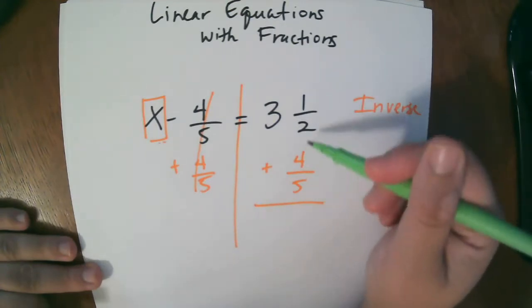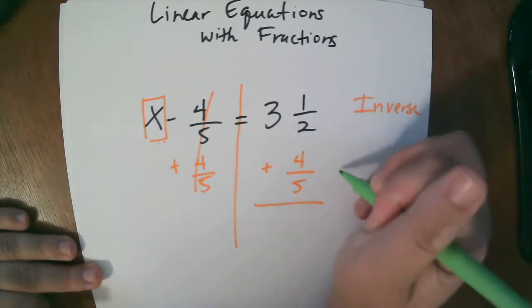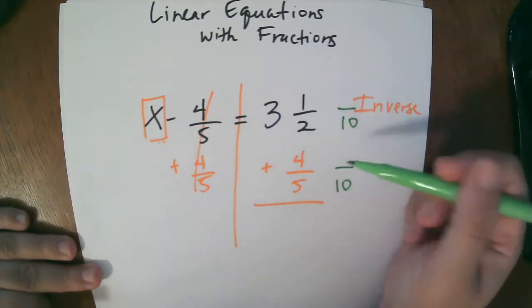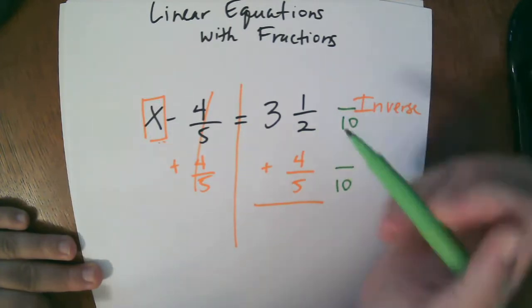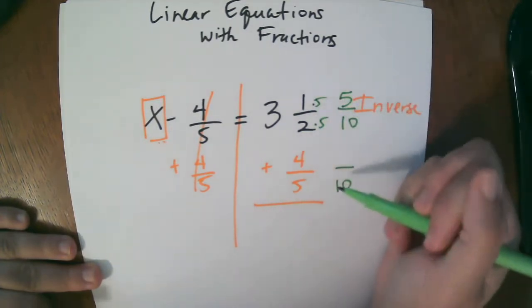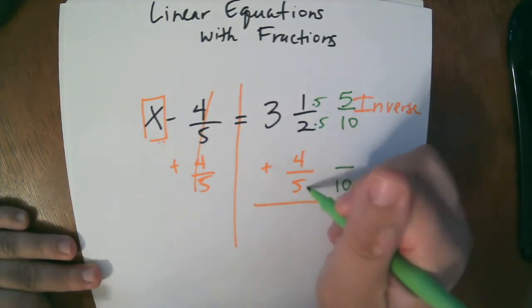Well, we need an LCM between 5 and 2. So what's a good LCM between 5 and 2? Hopefully you said 10. So let's start converting. How did I get from 2 to 10? I multiplied by 5. How did I get from 5 to 10? I multiplied by 2.